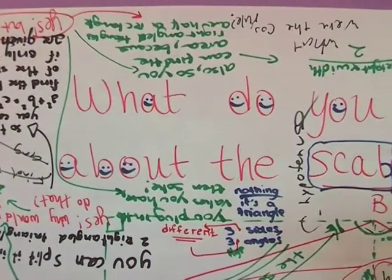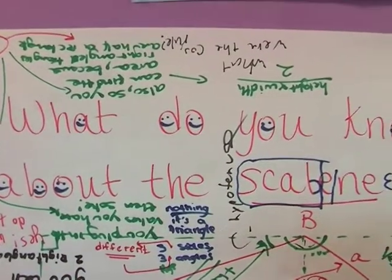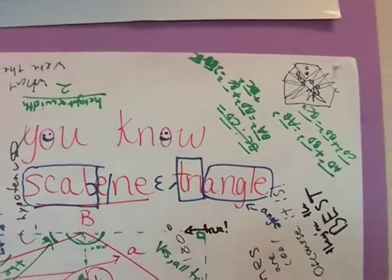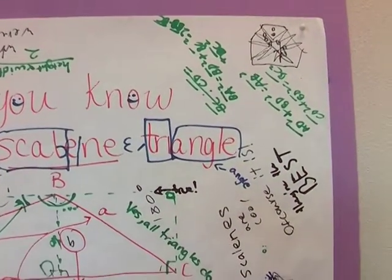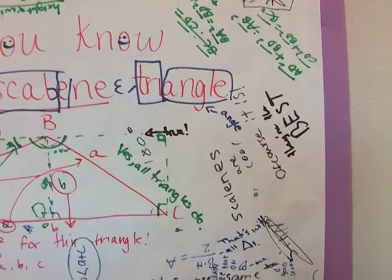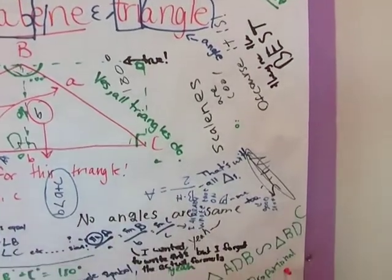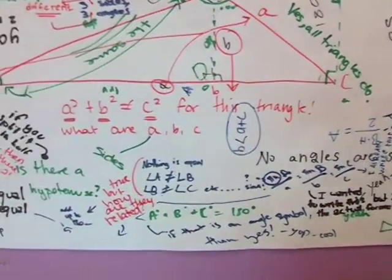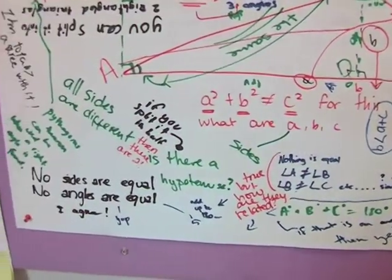So what we're really seeing on this is the students beginning to think together and the interactions with the different colored markers or the different groups and the different handwritings. You can see them making comments to each other and supporting each other as they think through the scalene triangle.